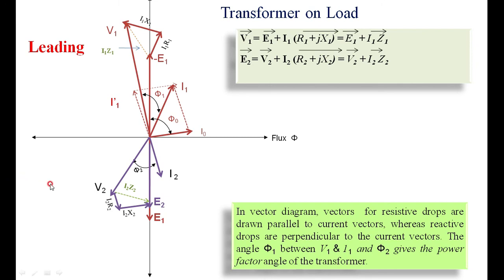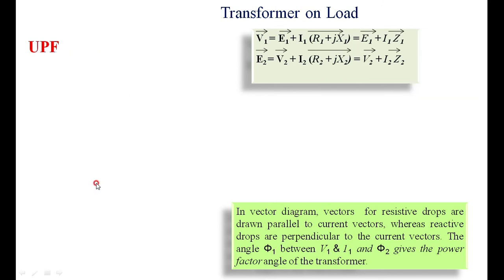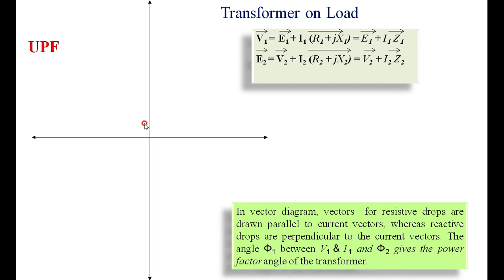This is how you draw the vector diagram for leading power factor — the only thing is fixing V2 and I2, then drawing the rest. Similarly, for unity power factor, the rest of the equations are the same; the only difference is the phase displacement between I2 and V2. For unity power factor, V2 and I2 are in phase. Once again, draw flux, E1, minus E1, place V2, and then I2 in phase with V2.